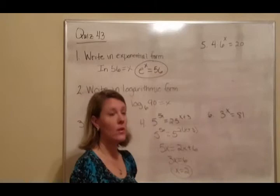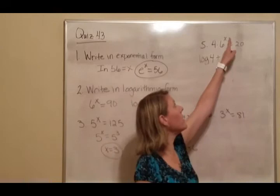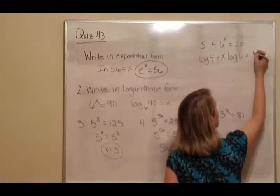So these we can't get all to the same base, so we're going to have to put in the logarithm. So this would be log 4, and when it's multiplied, you can add them. And your exponent comes out in front. So it's x log 6 equals log 20.